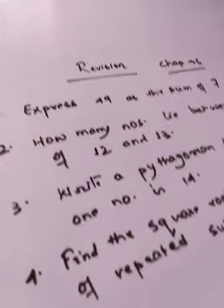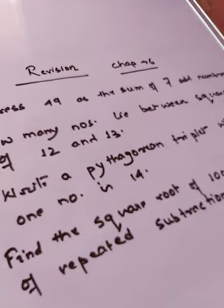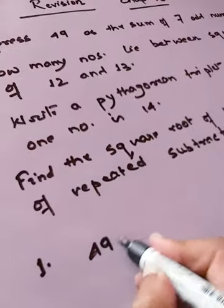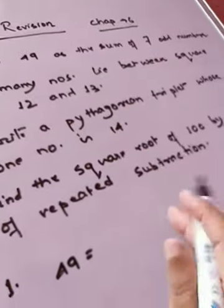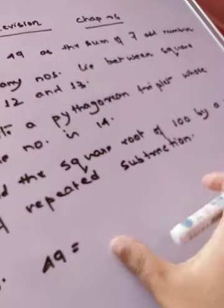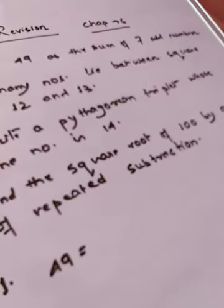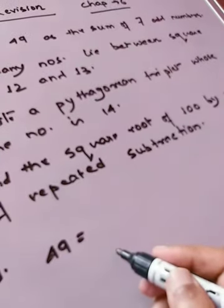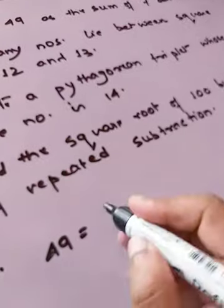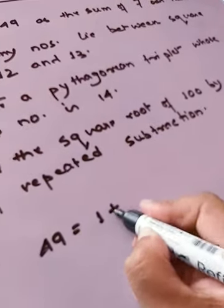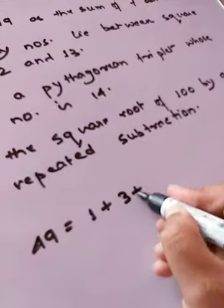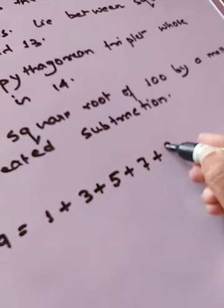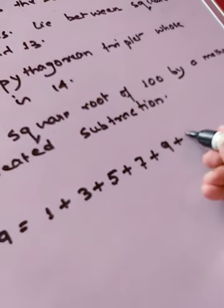In question number 1, express 49 as the sum of 7 odd numbers — that is, we have to express 49 as the sum of 7 consecutive odd numbers. Now, the smallest odd number is 1. The next odd numbers are 3, 5, 7, 9, and 11.